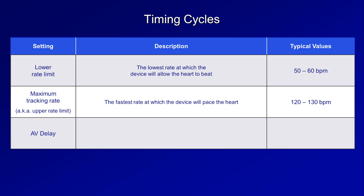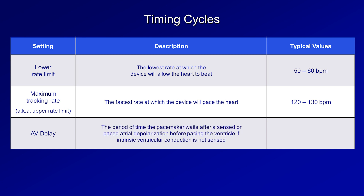The AV delay is directly programmed in VDD and DDD modes. This is the period of time the pacemaker waits after a sensed or paced atrial depolarization before pacing the ventricle if intrinsic ventricular conduction is not sensed — analogous to the PR interval. Typical values are 150 to 200 ms, though pacemakers can be programmed to have different AV delays for sensed versus paced atrial beats, since paced atrial beats necessarily have longer intrinsic AV delays. AV delay can also be rate-adaptive, shorter at faster heart rates during perceived exertion, which is how our AV node works naturally.